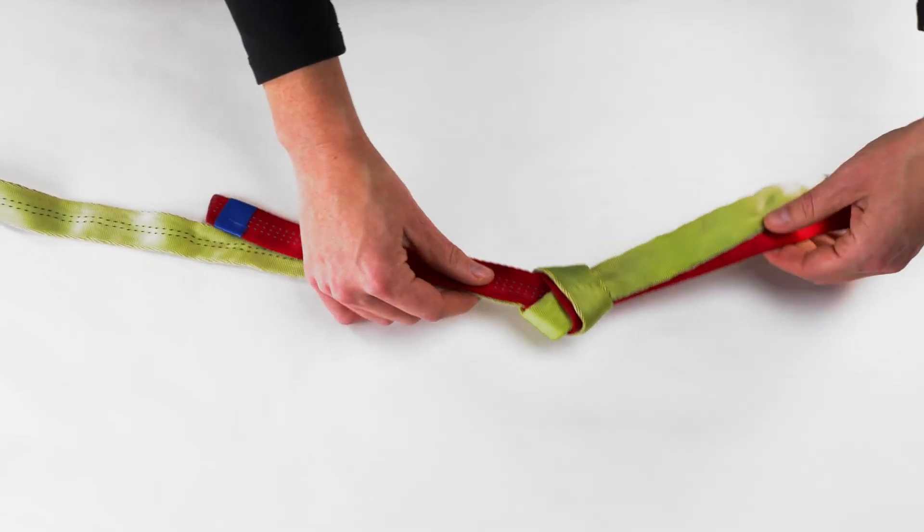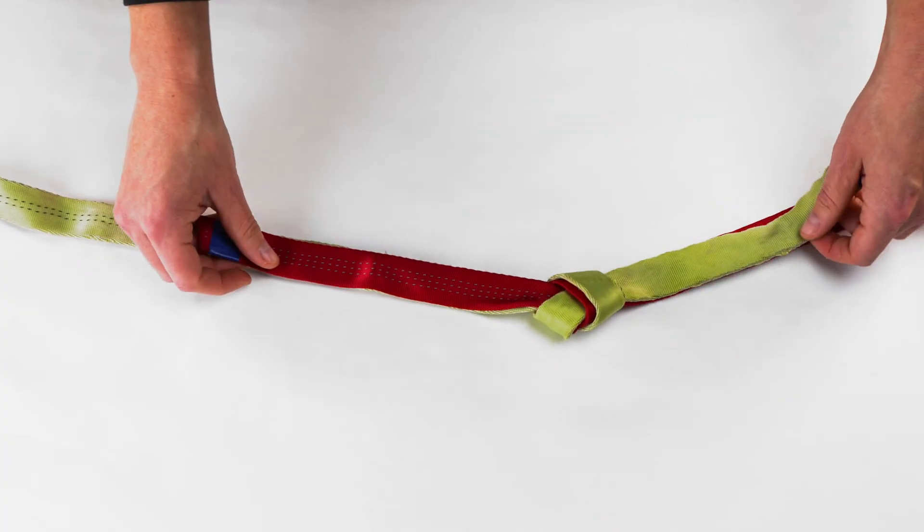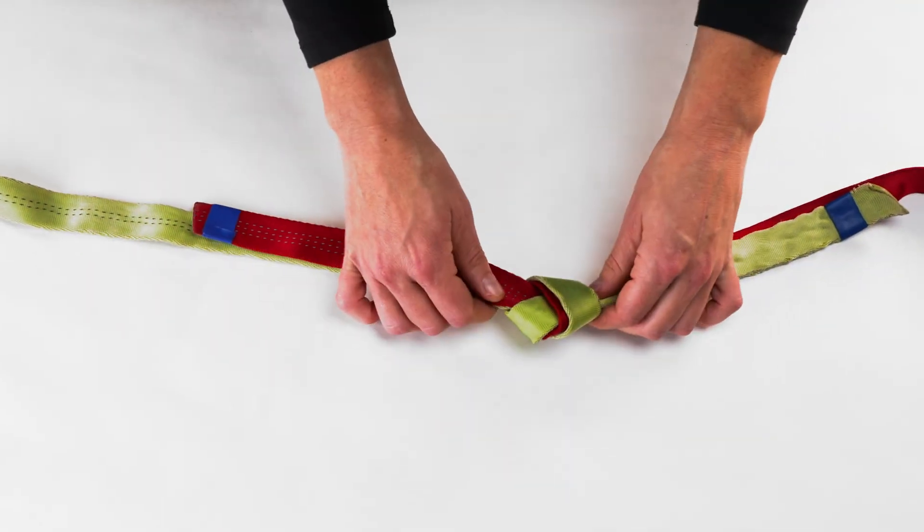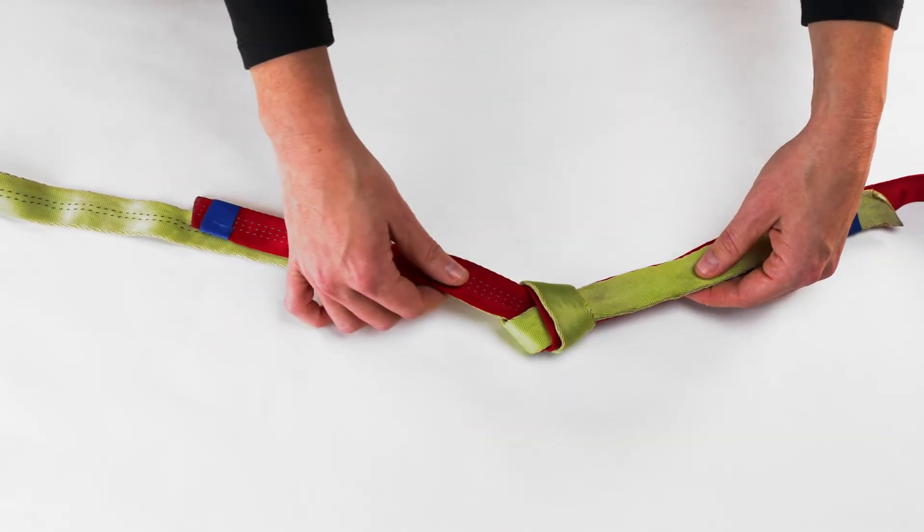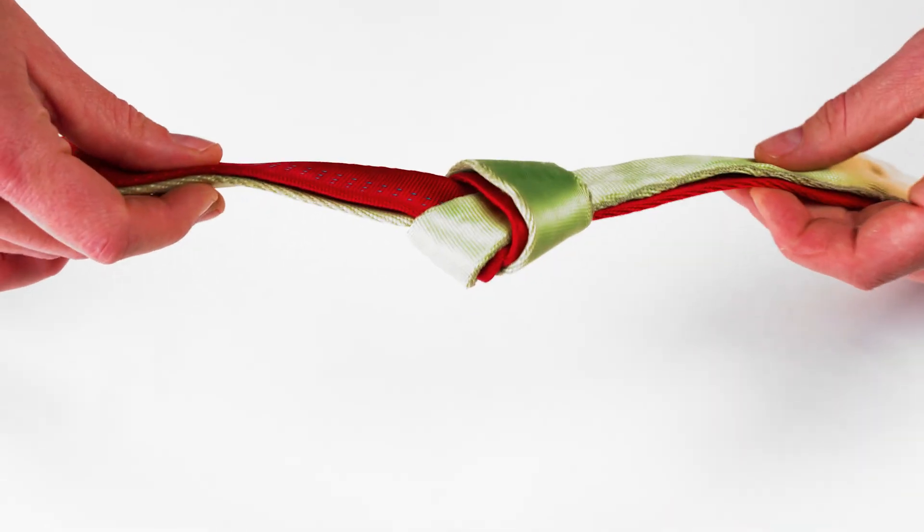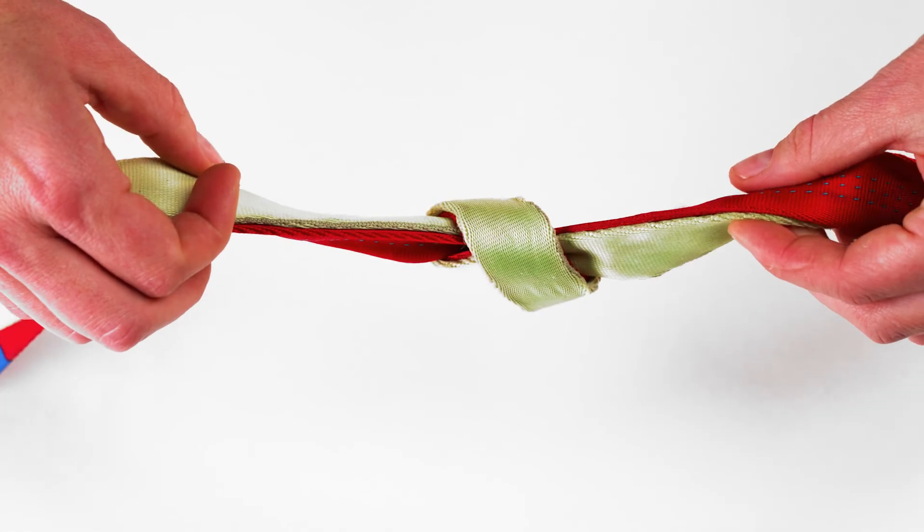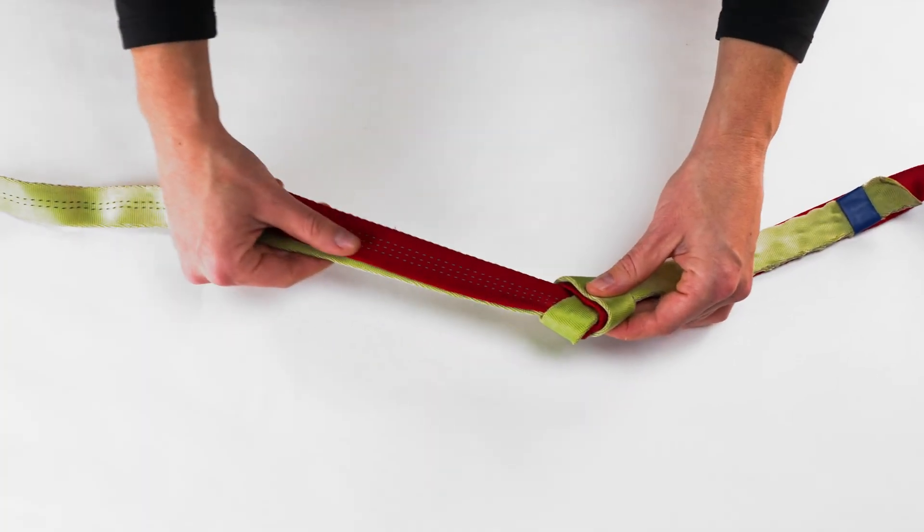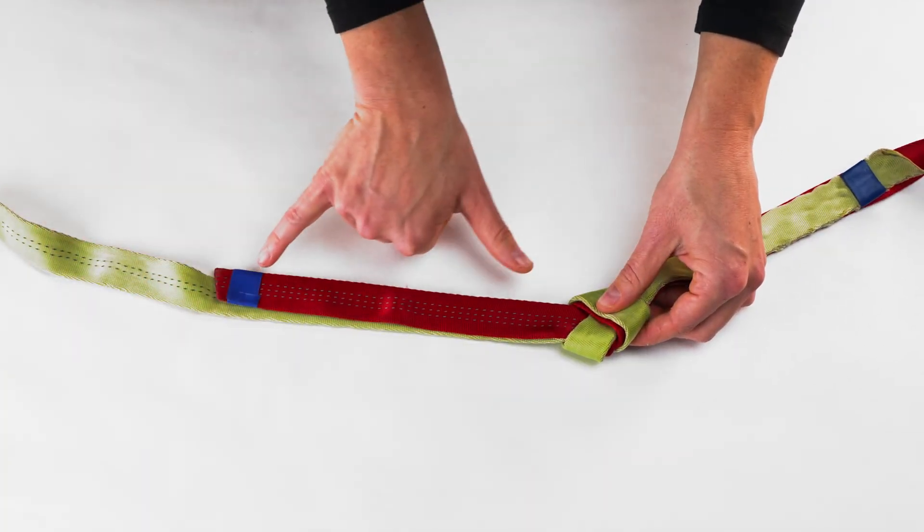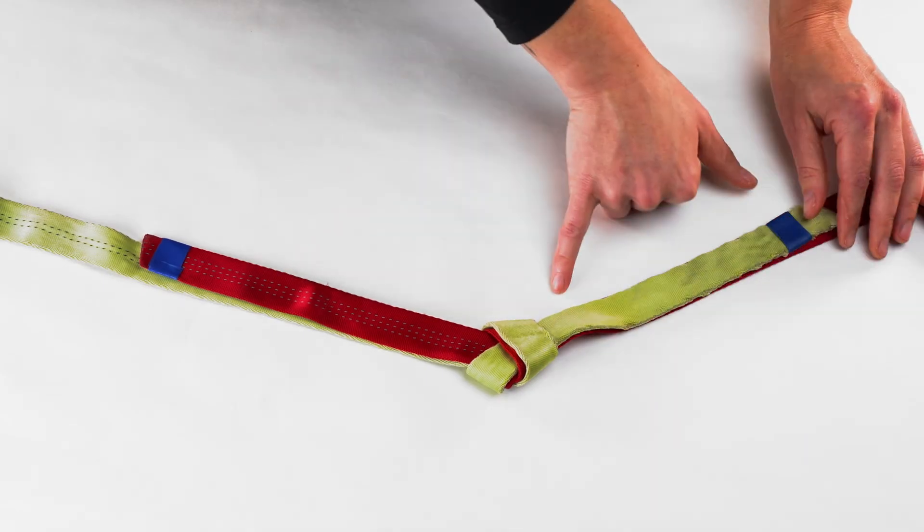This knot is used for tying together two pieces of similar webbing or joining two ends of the same piece to make a loop. It is very important that this knot is dressed properly to maximize its strength. Make sure the webbing is smooth and make sure you have enough tail on either side of the knot.